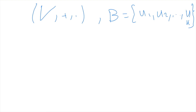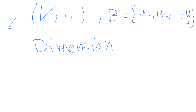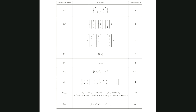In the recorded lecture I summarized the vector spaces we keep using and told you the dimension of each one. Let me share with you the summary table. For example, if you talk about R2, you take the standard basis — (1,0) and (0,1) — and the dimension is two. For R3, you take the standard basis similarly.